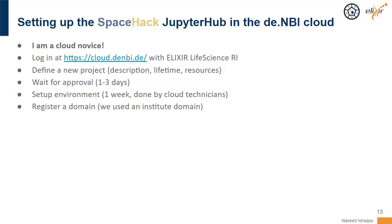The setup was really simple. You just go to the DENBI page, log in with your Elixir username, and request a new project — describing whether you want a simple VM or an OpenStack backend. Then you define your project in terms of how many machines you need, how long you need them for, how much storage you require, and whether you need a GPU. After you define your project, it takes a couple of days to get a response, and then you start working with the team you've been assigned to.